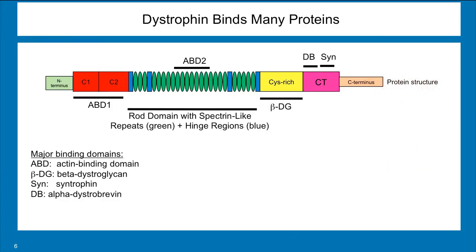Dystrophin binds to many other proteins, and in doing so it helps to localize those proteins to the proper place in muscle cells, just adjacent to the sarcolemma membrane. At each end of the dystrophin molecule we have an actin binding domain and a beta-dystroglycan binding domain, as well as binding domains for other proteins that are part of the dystrophin complex known as dystrobrevin and syntrophin. The central part of the dystrophin protein is a very large rod-like domain that confers flexibility and elasticity on the dystrophin molecule. That's important because muscle cells are known for contracting and doing work, and this dystrophin protein plays an important role in tethering the internal cytoskeleton of muscle fibers to the extracellular matrix, needing to be flexible and elastic to withstand tremendous forces of contraction.